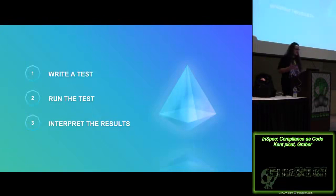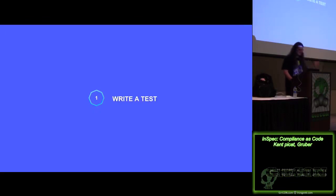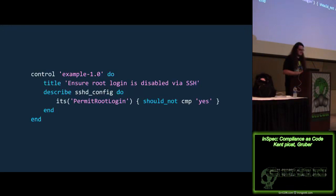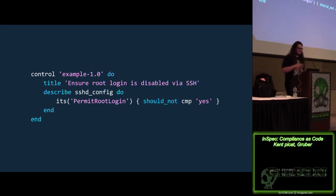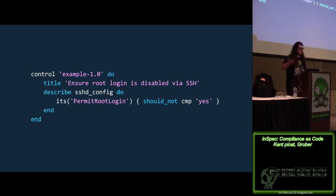With InSpec, it's a relatively simple process: you write a test, run the test, and interpret the results. Here's a very simple example — a control called 'example 1.0' with a title 'ensure root login is disabled via SSH.' We describe the SSHD config: permit root login should not compare to yes. What's nice is that it's relatively human readable — you're not asking an auditor to read double equal signs. You show it should not be enabled or should not be installed.